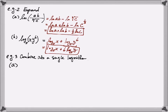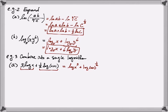The next type is the reverse: given an expanded expression, simplify it into a single logarithm. For example, combine 3 log x plus one-half log of x plus 1 into a single logarithm. Since we're doing the opposite operations, we apply rule number 3 first: the first expression becomes log of x cubed, and the second becomes log of x plus 1 raised to the one-half. Then apply rule number 1 to turn the sum of logs into a log of a single product: log of x cubed times x plus 1 to the one-half, or equivalently x cubed times the square root of x plus 1.